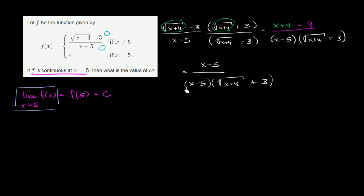And now it pops out at you. Both the numerator and the denominator are now divisible by x minus 5. So you can have a completely identical expression if you say that this is the same thing. You can divide the numerator and the denominator by x minus 5 if you assume x does not equal 5. So this is going to be the same thing as 1 over square root of x plus 4 plus 3 for x does not equal 5.